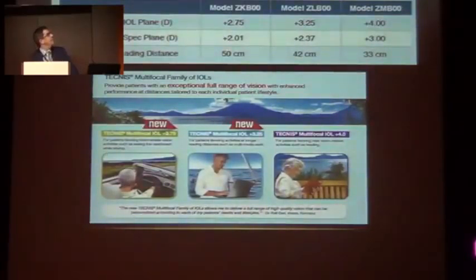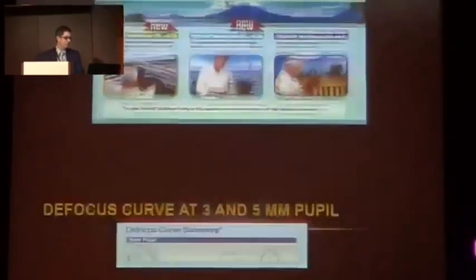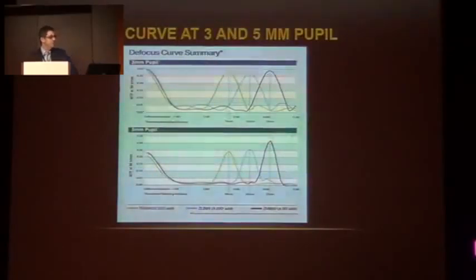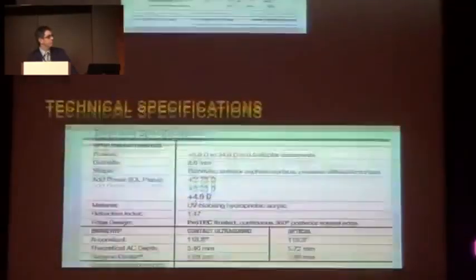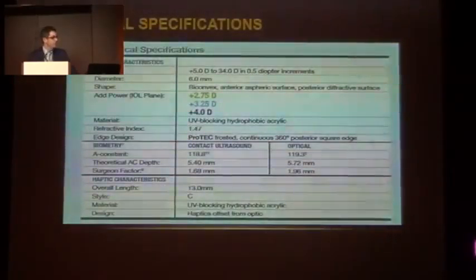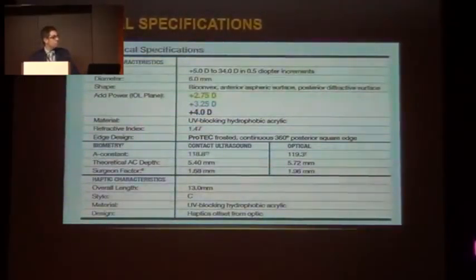The technical identification of this IOL family provides vision with an exceptional full range of vision, with enhanced performance at distance, tailored to each individual's lifestyle. This is the focus curve at 3 and 5 millimeters. This is the same technical identification of the IOL — same IOL, but the only difference is the addition power.